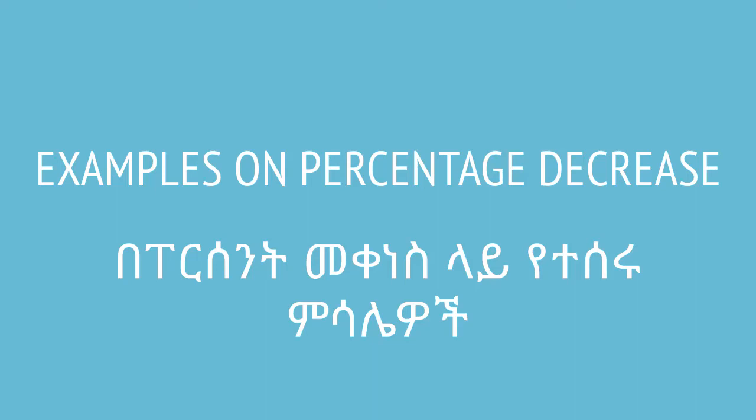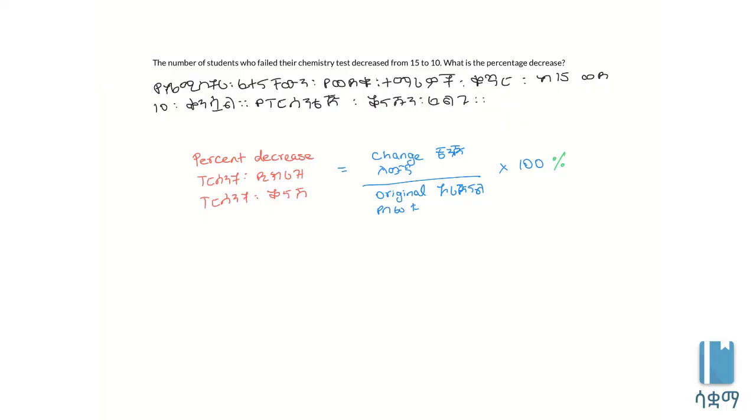Hello everyone, how are you? In this video, I will show you how to calculate percent increase and percent decrease. The number of students who failed their chemistry test decreased from 15 to 10. What is the percentage decrease?